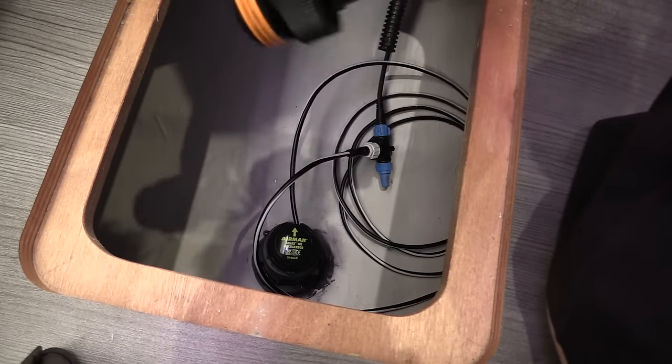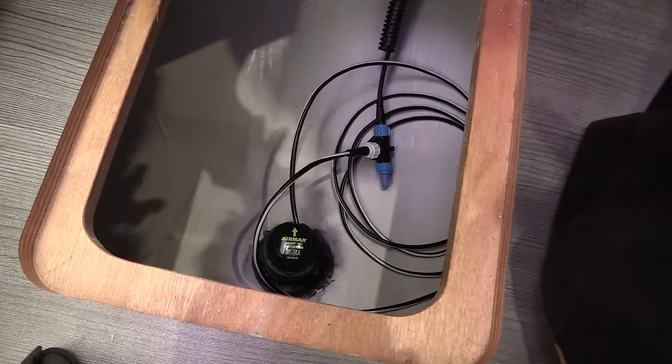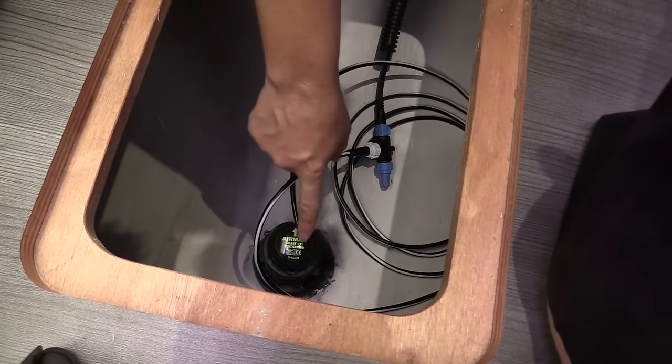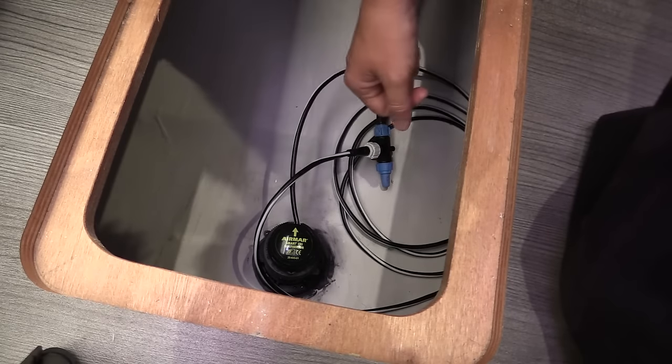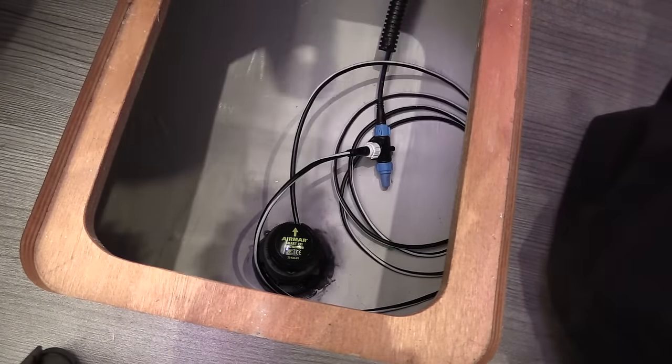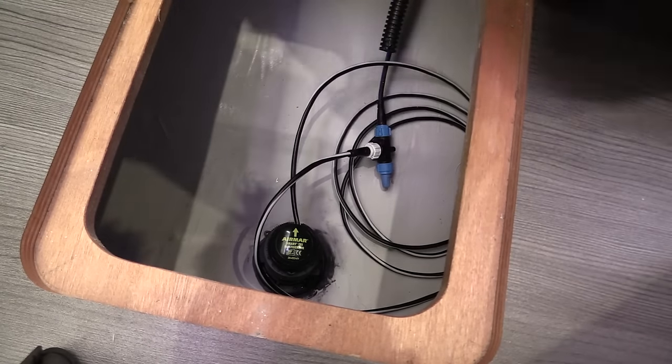Now, the other thing I realized, as I was looking at this, that I put the transducer in the wrong way. This arrow is supposed to be pointing forward of the bow, and right now it's facing the starboard side. So I'm not sure how I'm going to be able to turn it. Let's see here.